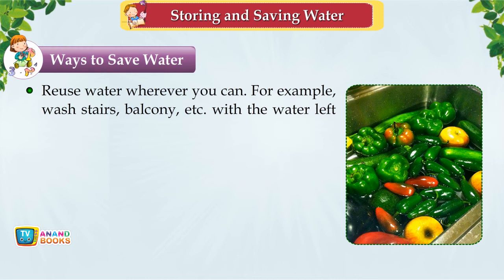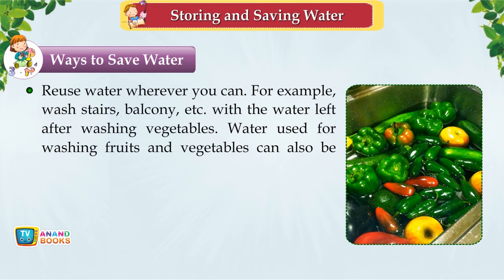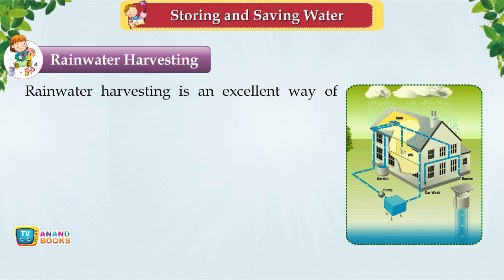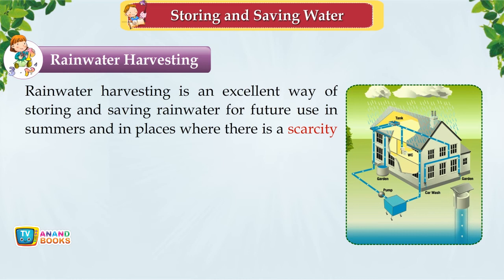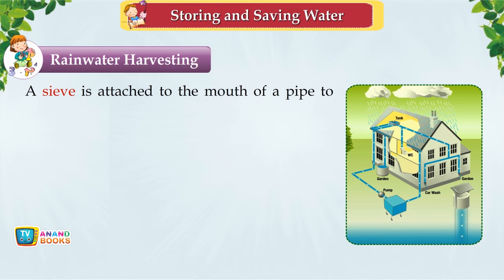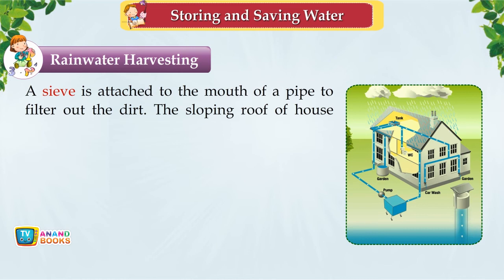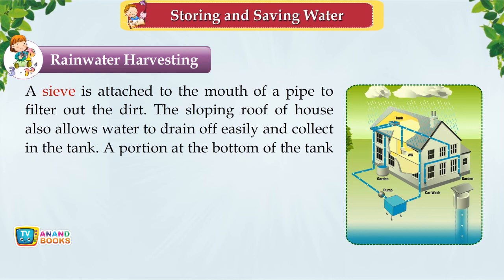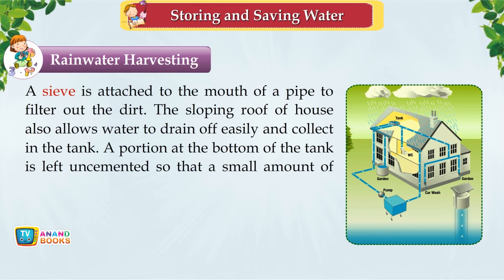Water used for washing fruits and vegetables can also be used to water plants. Rainwater harvesting is an excellent way of storing rainwater for future use. Rainwater from the roof is collected in a tank through a pipe with a sieve to filter dirt. A portion at the bottom of the tank is left uncemented so water seeps into the ground and can be used for various purposes.